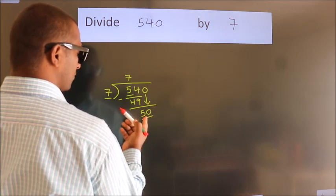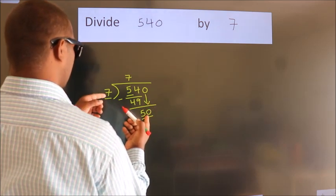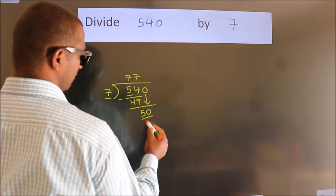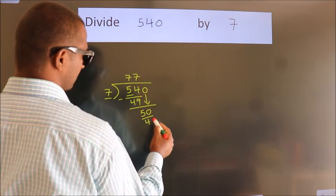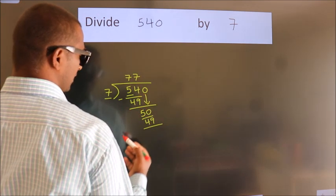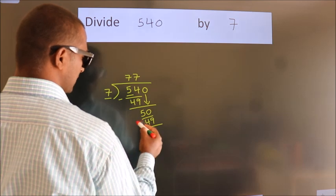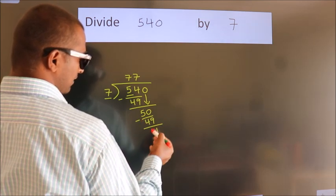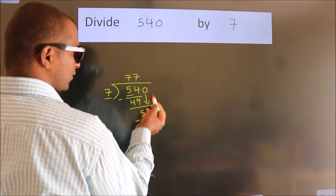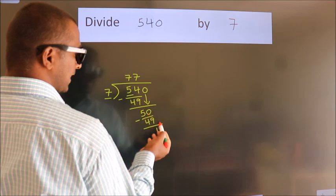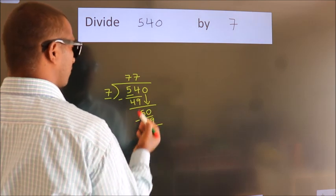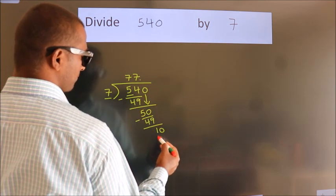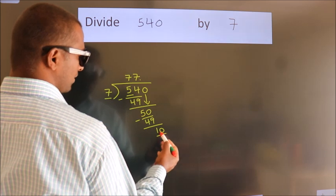A number close to 50 in the 7 table is 7 sevens, 49. Now we subtract. We get 1. After this, there are no more numbers to bring down. So what we do is, we put a dot and take 0. So we have 10.